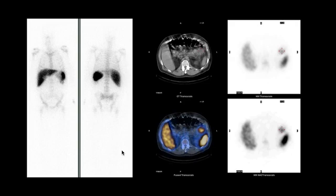On this slide we have two whole body images from an Indium-111 WBC scan showing anterior and posterior views. This patient presented with fever and chills and we were trying to detect and localize a focus of infection that was not seen on conventional imaging.